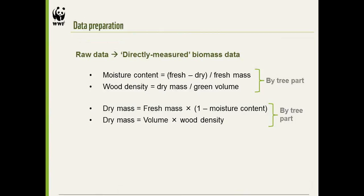Data preparation is quite simple: converting raw data to directly measured biomass data. First, calculate moisture content and wood density by tree part — stem, lower stem, upper stem, large branches, small branches. Then calculate dry mass either as fresh mass times one minus the moisture content, or if done by volume, multiply by wood density. You do that by tree part.